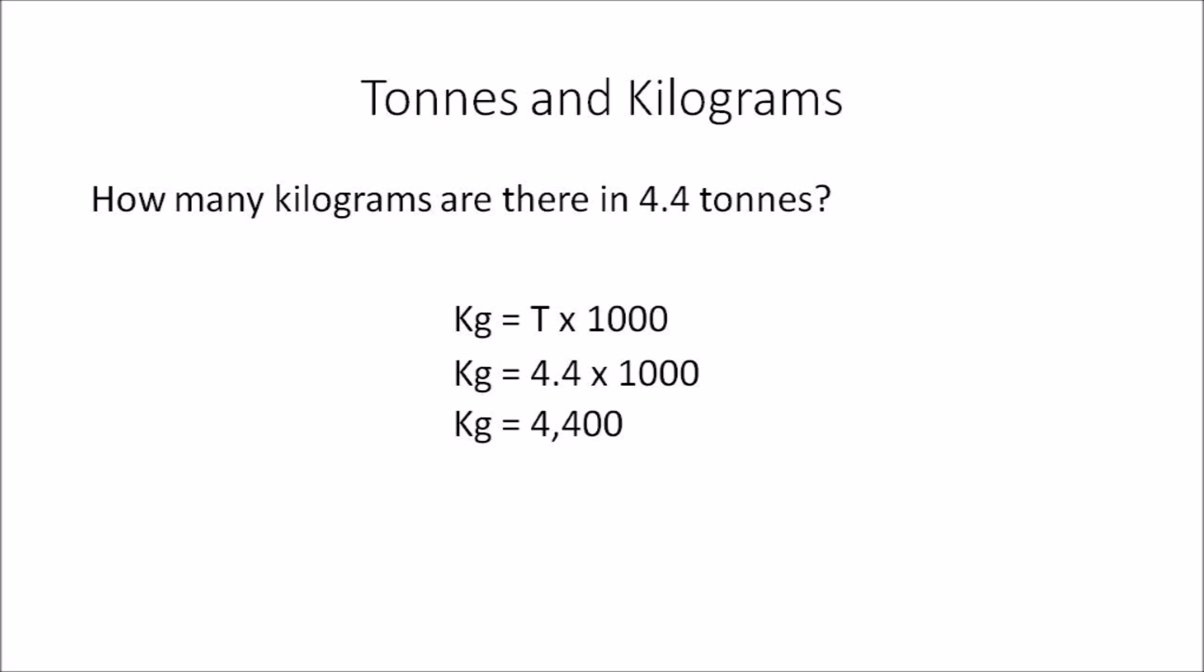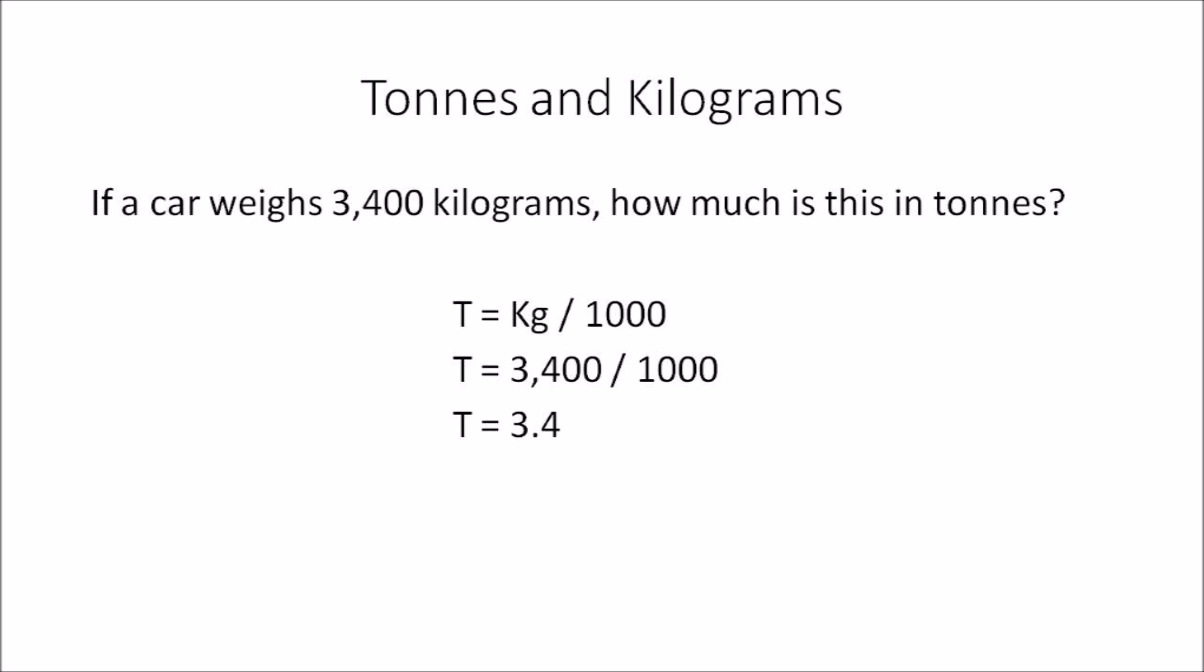In this example, how many kilograms are there in 4.4 tons? Simple - kilograms equals tons multiplied by 1000, so 4.4 tons × 1000 gives you 4400 kilograms.